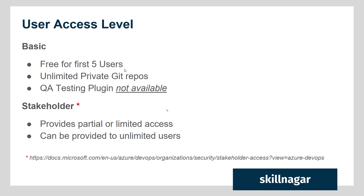We have three types of user access levels. First, we have the Basic level. Basic level users — it is free for the first five users, and you can have unlimited private Git repos. However, the QA testing plugin is not available at this access level, which is an important point to understand.